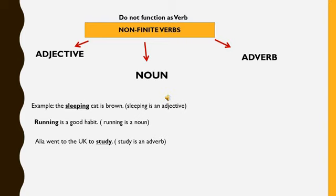Now you can see here a chart. Non-finite verbs do not function as verbs. So it functions as adjective, as a noun, or as an adverb. So here are some examples. Number one: The sleeping cat is brown. So here, sleeping is an adjective. The second one: Running is a good habit. So running is a noun in this sentence. And the third sentence: Alia went to the UK to study. So here, study is an adverb. So now we have come to know that non-finite verbs work as an adjective, as a noun, or as an adverb.